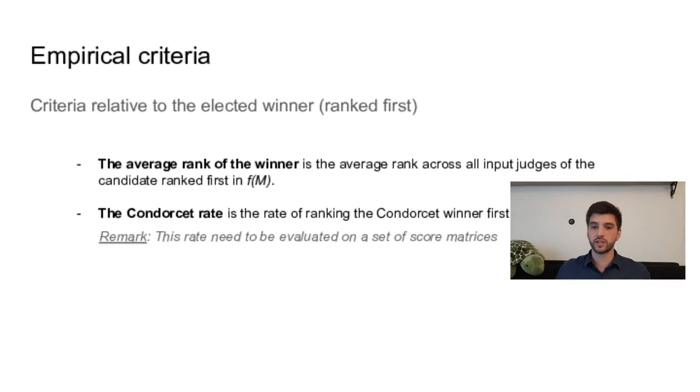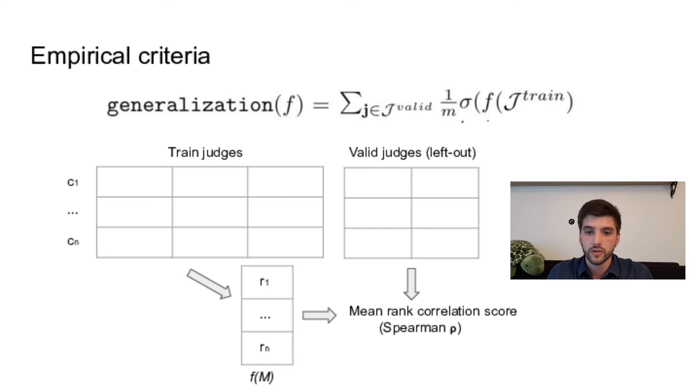Another empirical criteria is the generalization. So to compute the generalization, you divide your judges in two subsets, one training set and one validation set. And you compute the ranking on the training set, and then compare this ranking with the ranking of the judges of the validation set. And you compare them using a correlation score. So here we use Spearman correlation, which is just like Pearson but on ranks. And I think this is really a score that you want to optimize. For example, when you're doing model selection, the generalization score estimates how your selected model will perform on future unknown tasks.